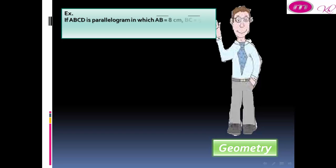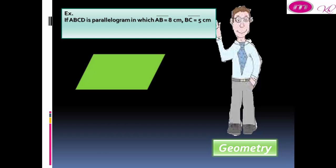If ABCD is a parallelogram in which AB = 8 cm, BC = 5 cm, and measure of angle D = 104 degrees. Draw BE perpendicular to CD, cutting CD at E. Find measure of angle CBE.